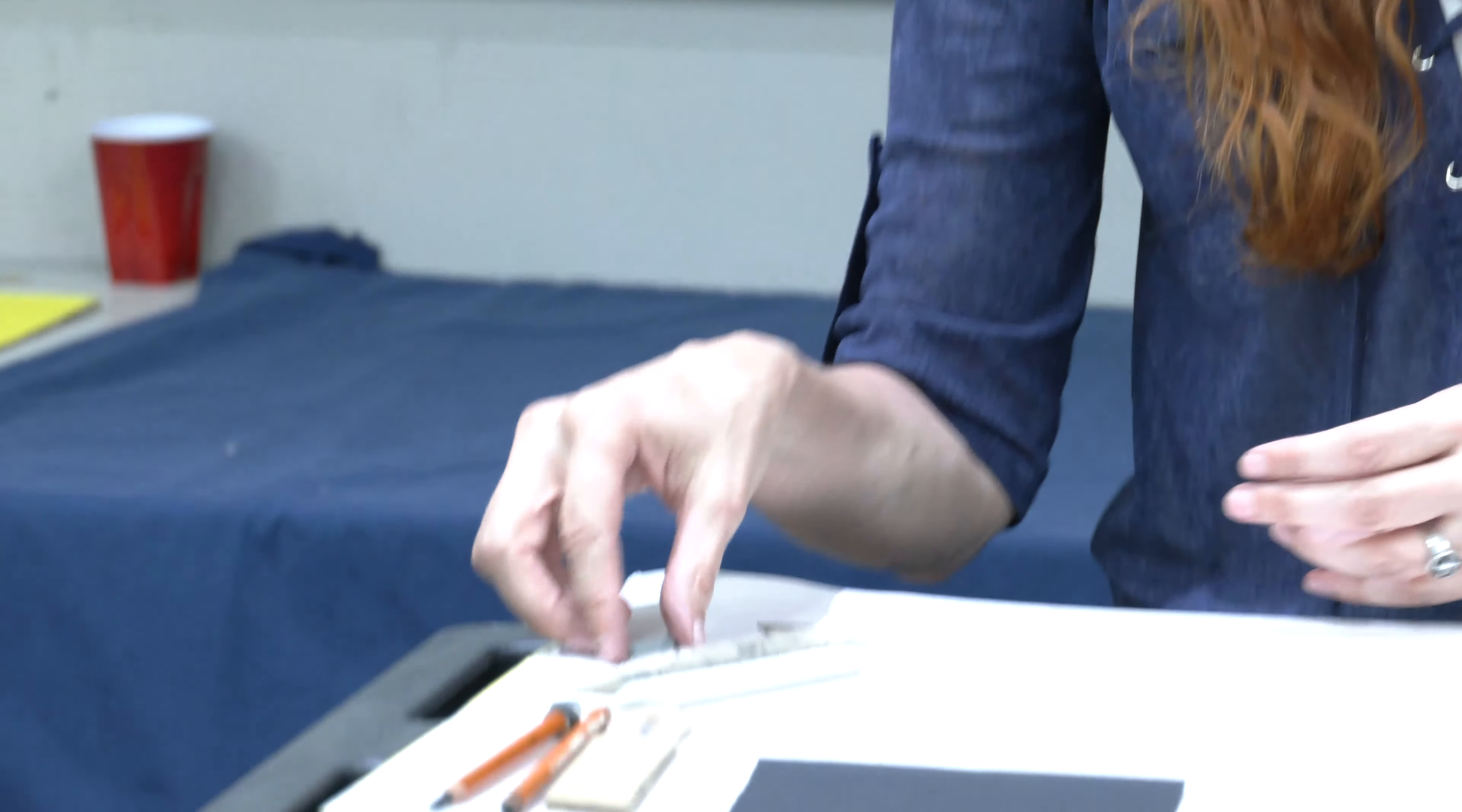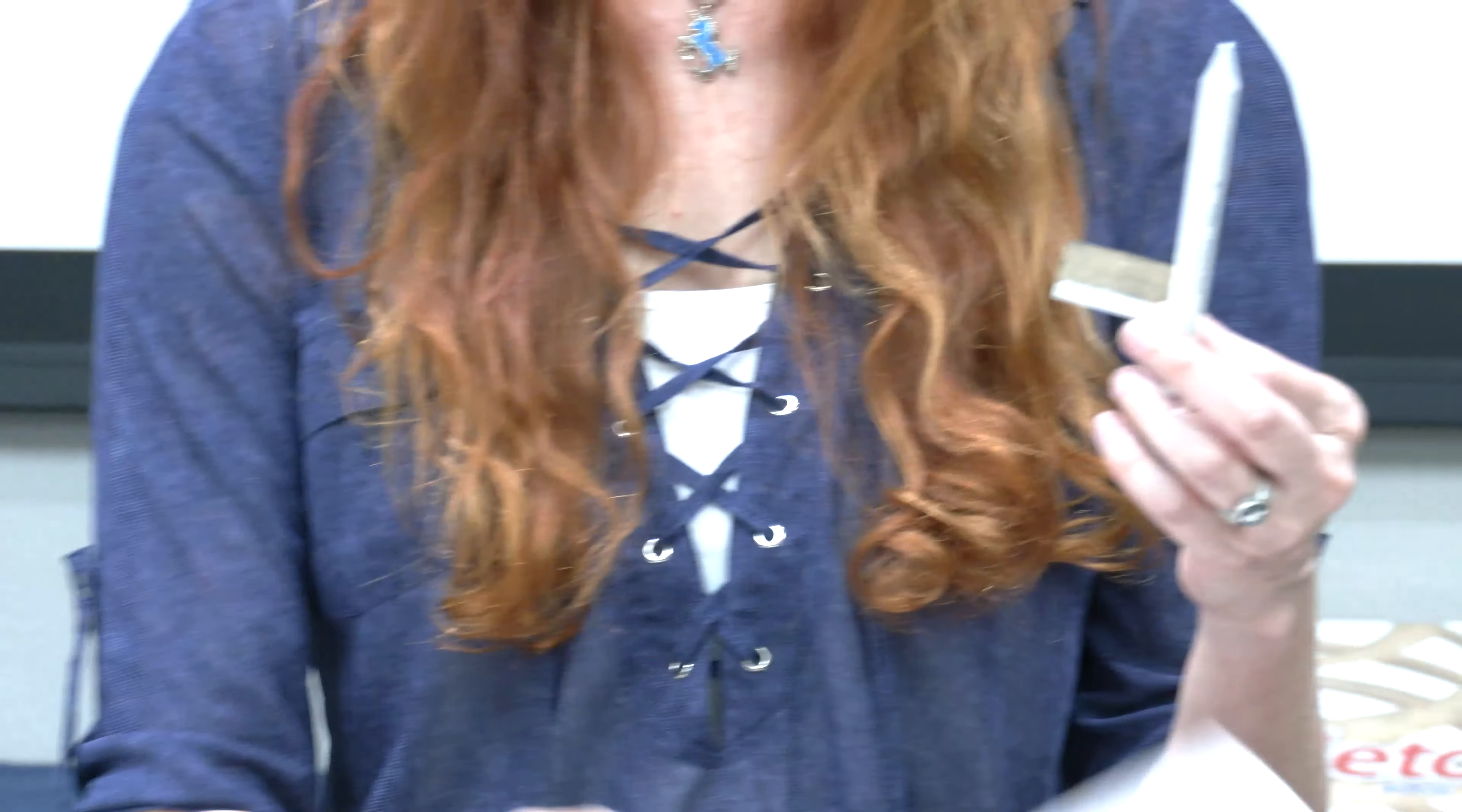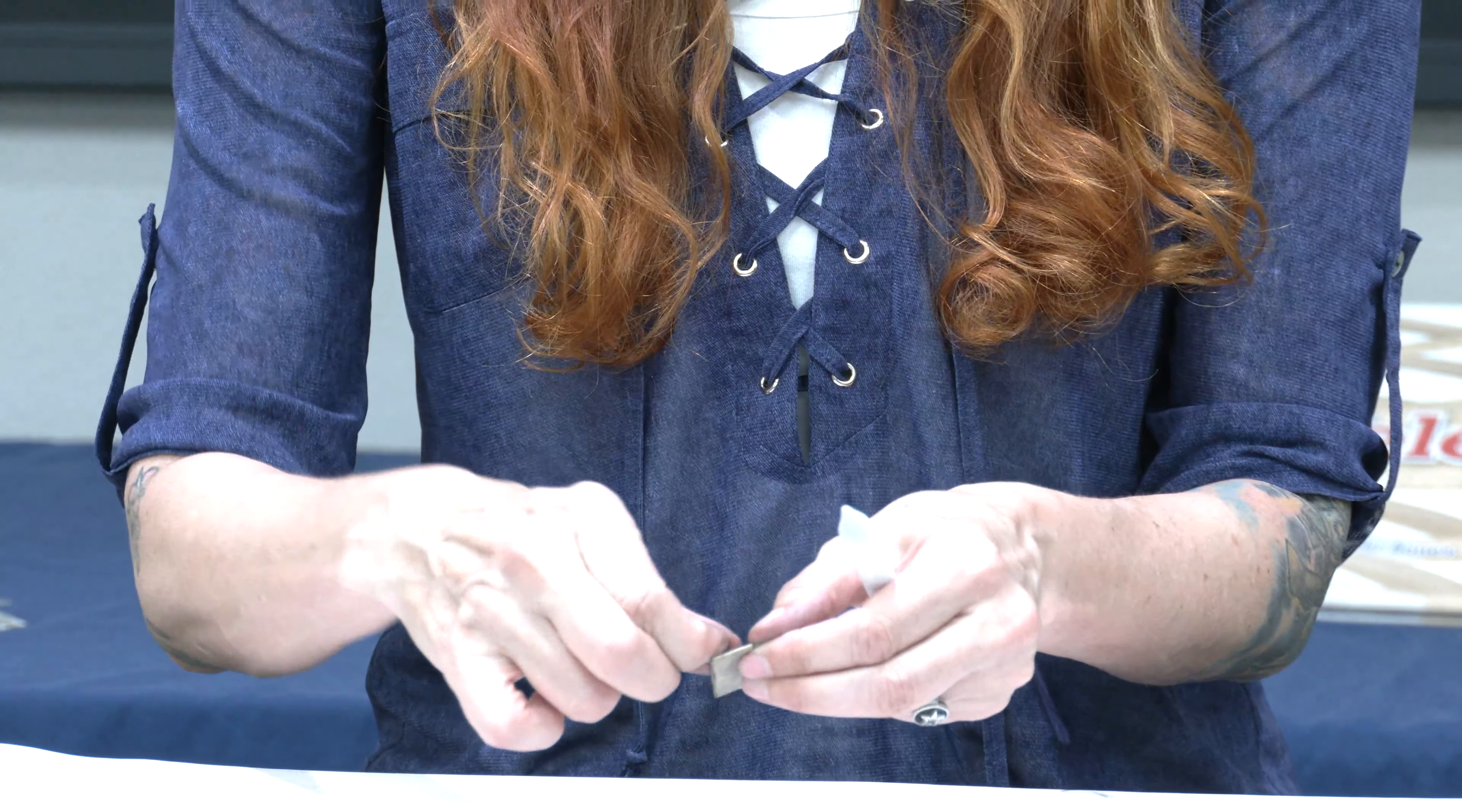Now what we're going to need, before when we sharpened our charcoal and conte, we used this blade, but now we're going to use a safety blade. What you're going to need is a brand new safety blade because these blending stumps, what they're actually made of is rolled up newsprint. This paper here rolled up super tightly makes the blending stumps and this particular blade is too thick and it'll just tear it up. So we're going to use our safety blade. This is a brand new one.